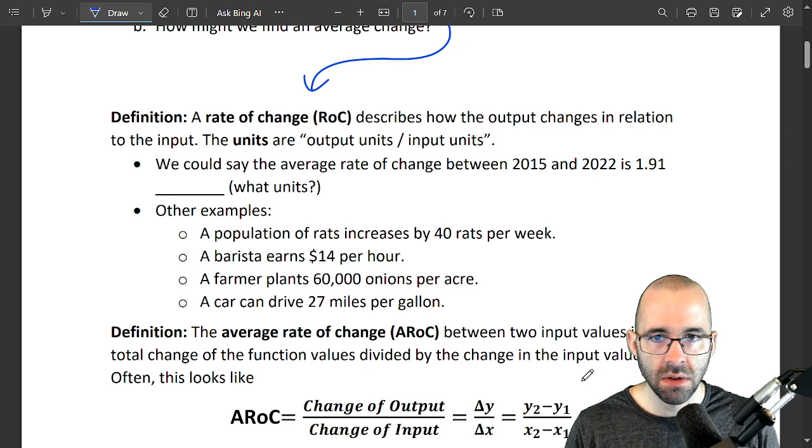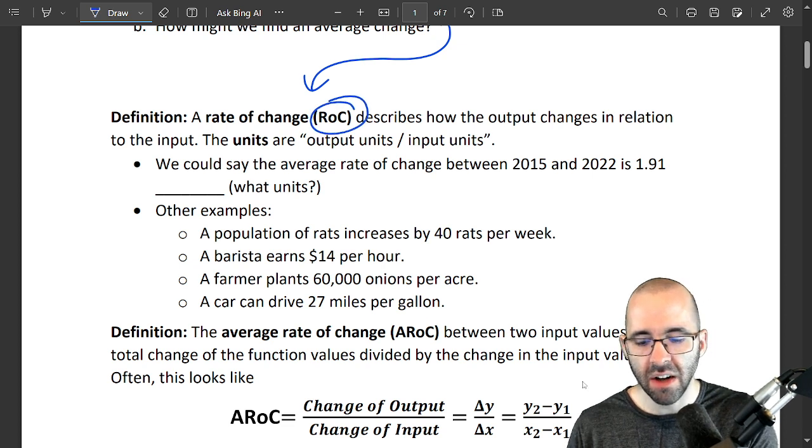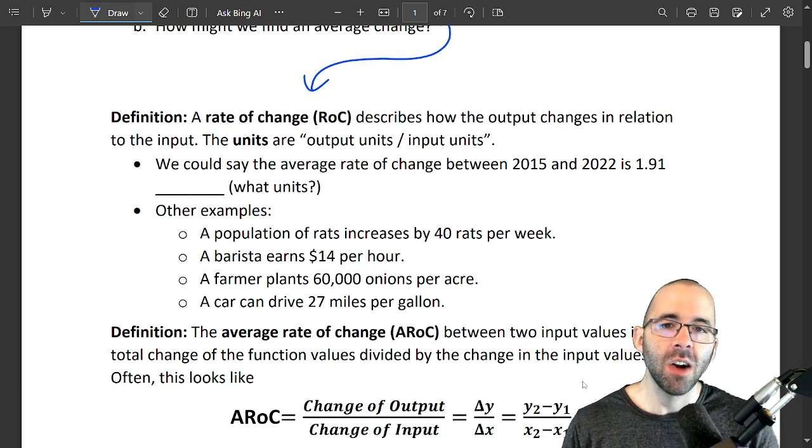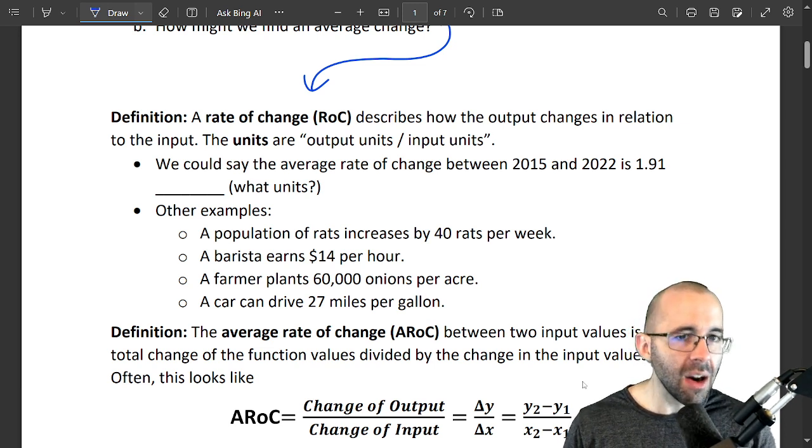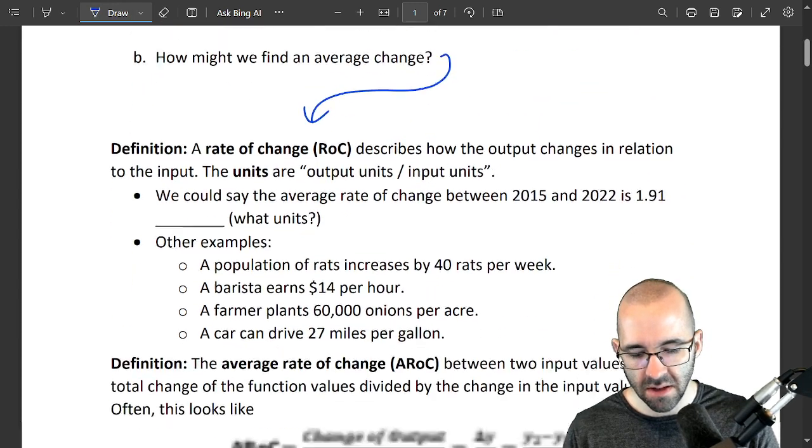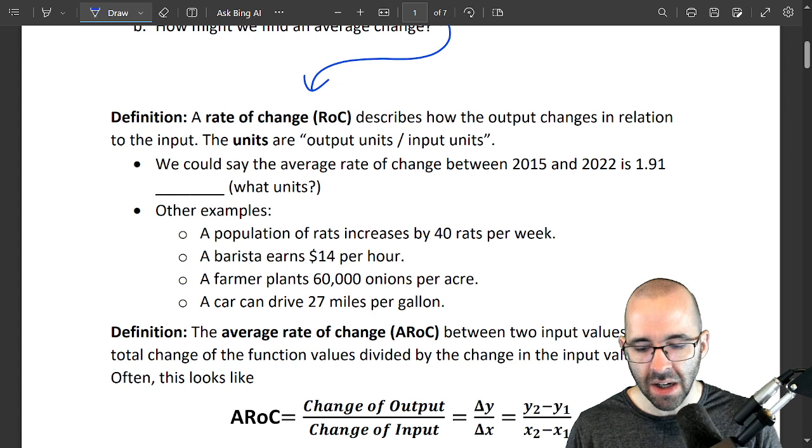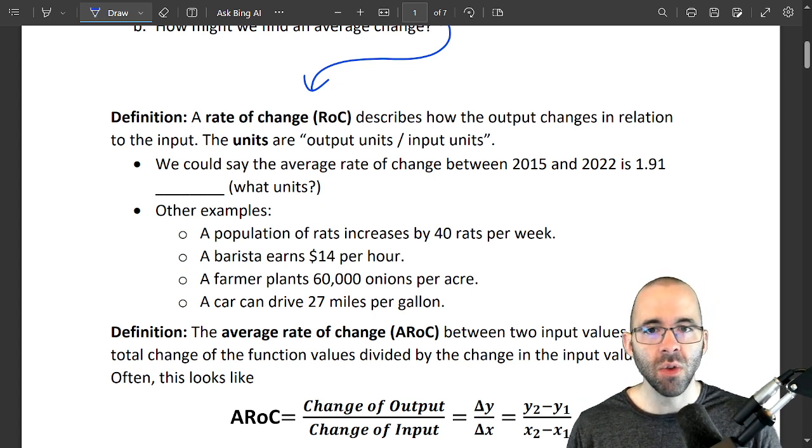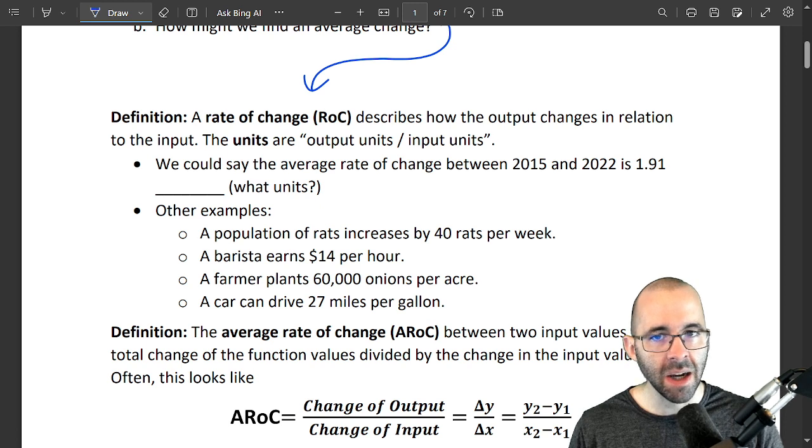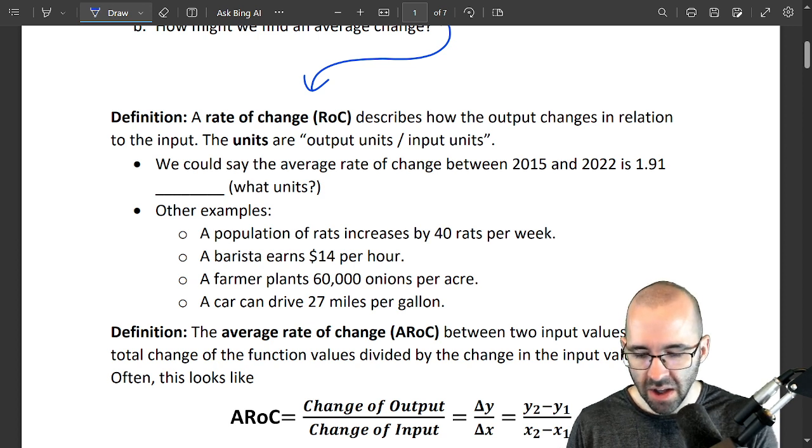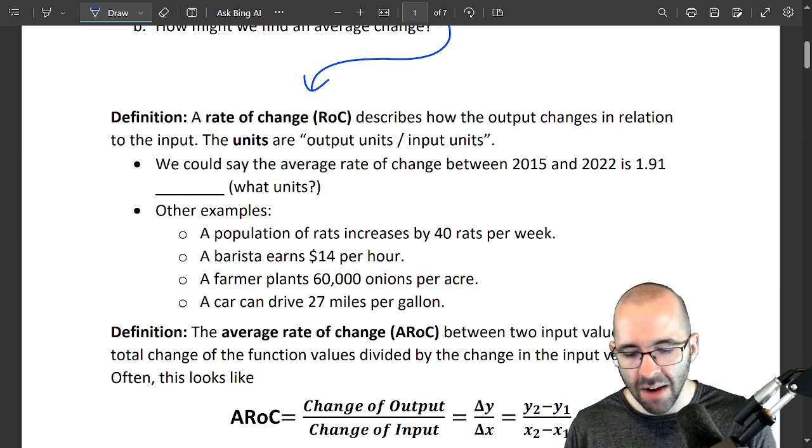So a rate of change—and we'll often abbreviate it RoC because I don't like to write words, I like abbreviations—a rate of change describes how the output (our output in this case is cost of gas) changes in relation to an input (in this case time). The units of a rate of change are output units divided by input units. Let's not worry about that second part too much. In this question, we could say that an average rate of change between 2015 and 2022, I calculated it out, it's 1.91.